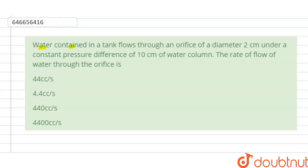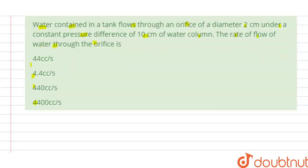Water contained in a tank flows through an orifice of diameter 2 centimeter under a constant pressure difference of 10 centimeter of water column. The rate of flow of water through the orifice is: options A, B, C, D are given here. We have to find the correct option.